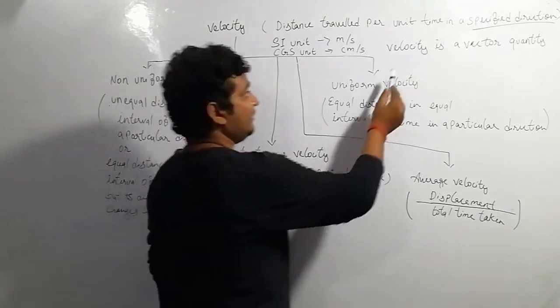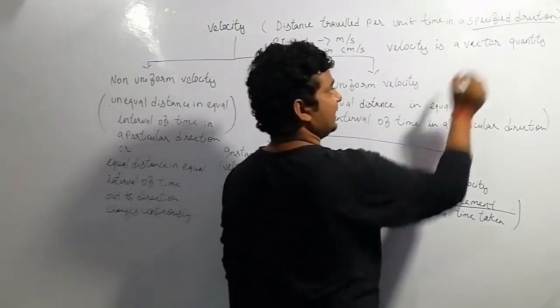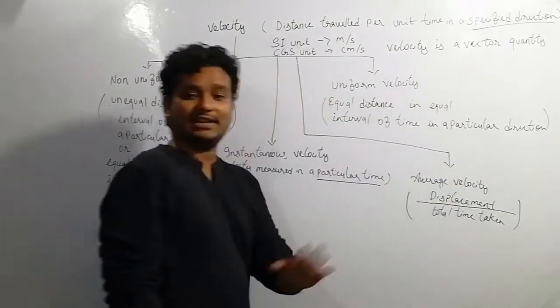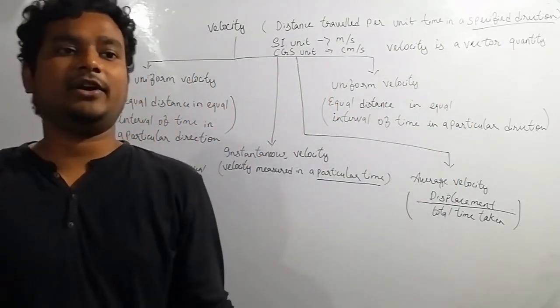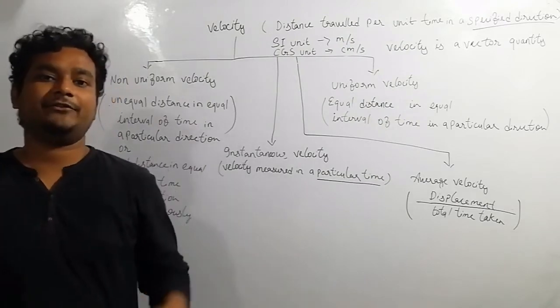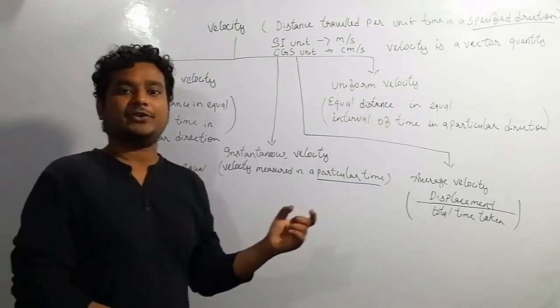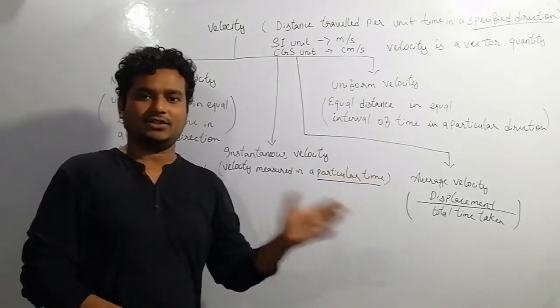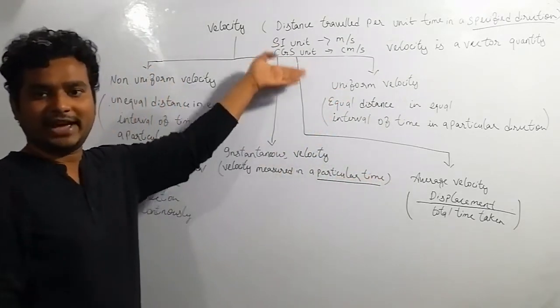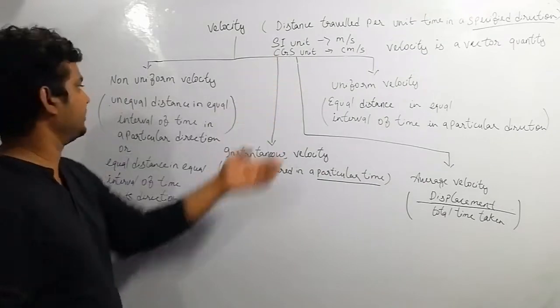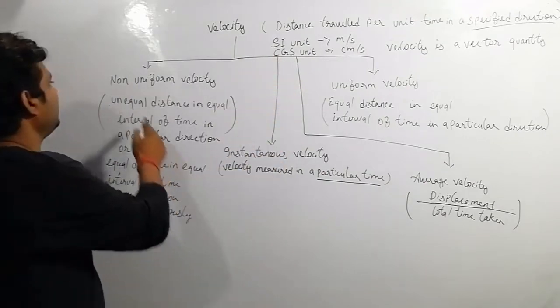One important thing: velocity is a vector quantity. As explained earlier, a vector quantity has both magnitude and direction. That is why we include direction in velocity.